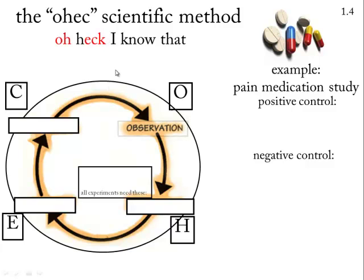O for observation — take a look at something and wonder about it. H for hypothesis — offer an answer to it. For example: the sky is blue due to Rayleigh scattering.